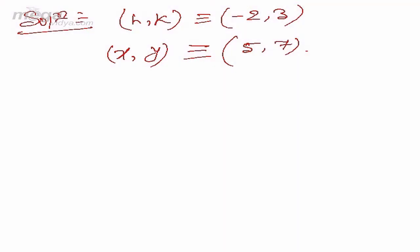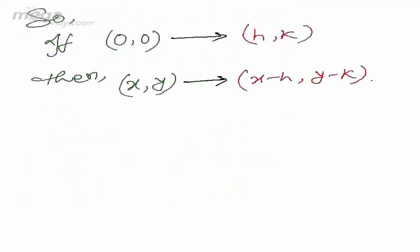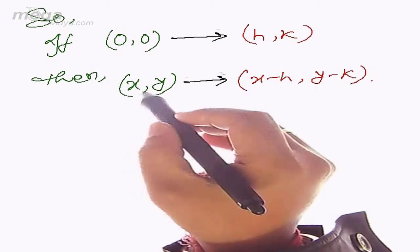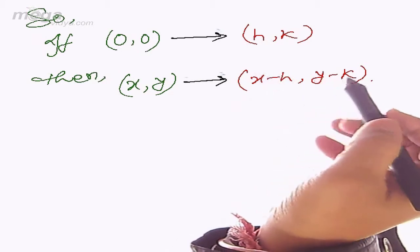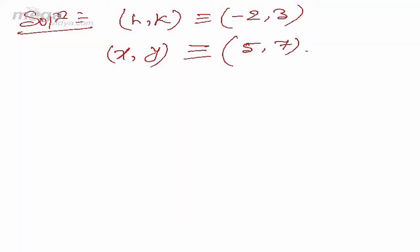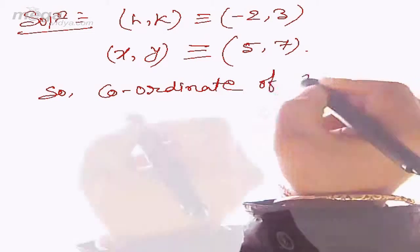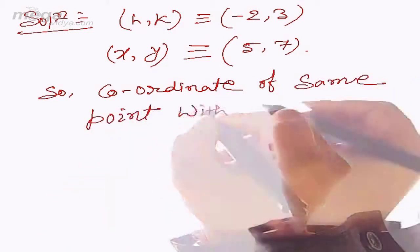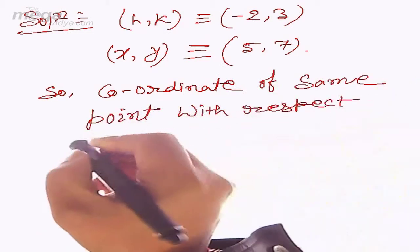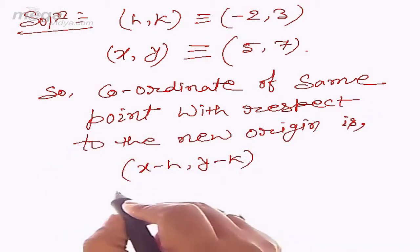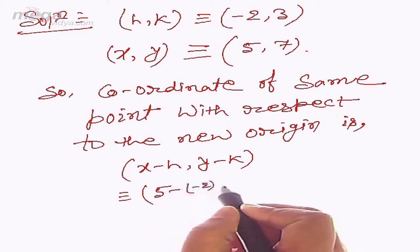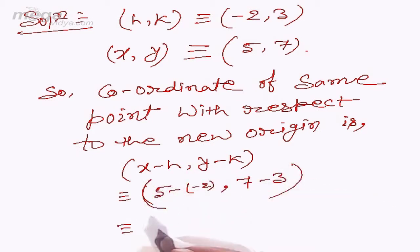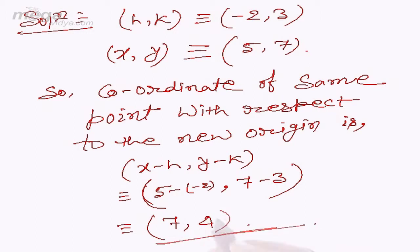Using the previous formula: if (0,0) is shifted to (h, k), then (x, y) becomes (x-h, y-k). So the coordinate of the same point in the new position with respect to the new origin is (x-h, y-k). Hence it becomes (5 - (-2), 7 - 3), which gives us (7, 4).